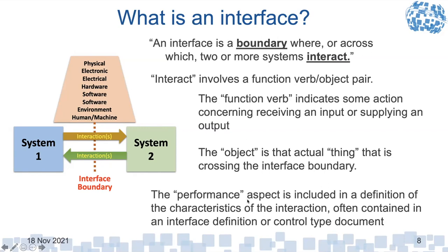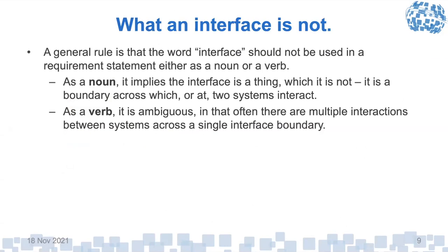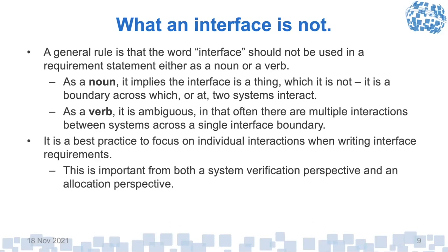There are three different things that need to be addressed when you are defining an interaction. As for what an interface is NOT: a general rule is that the word 'interface' should not be used in a requirement statement, either as a noun or a verb. As a noun, it implies the interface is a thing, which it's not. As a verb, it's ambiguous because there are often multiple interactions between systems across a single interface boundary. We need to focus on the individual interactions, which is important for both system verification and allocation — each interaction should be something you verify your system against. If you say 'the system shall interface with this other system' and there are five different interactions, you've violated the single-thought rule of requirements.